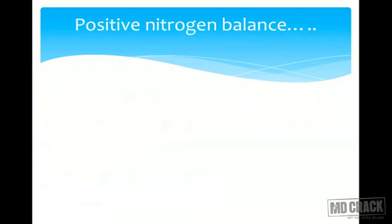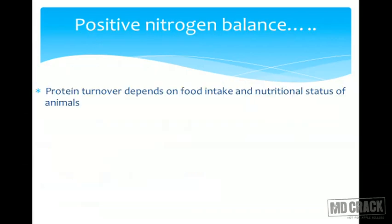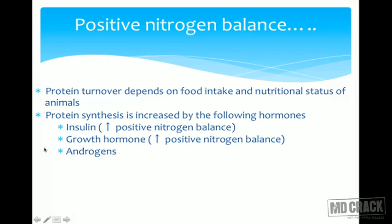The hormones responsible for bringing about positive nitrogen balance are insulin, growth hormone, and androgens. Protein synthesis is increased by insulin, growth hormone, and androgens — these promote positive nitrogen balance. Protein turnover depends on food intake and nutritional status.